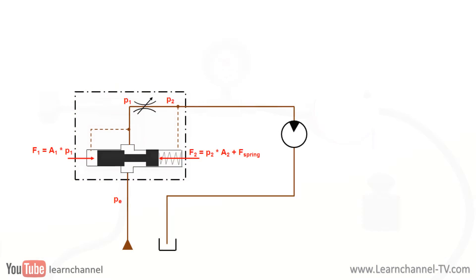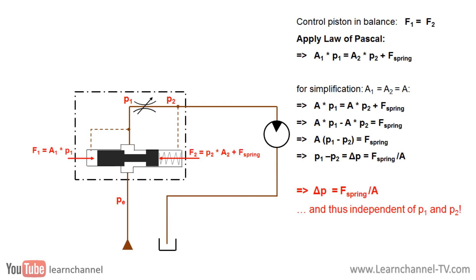For detailed information, let's switch to a schematic view. Consider the control piston in balance. As deduced aside, the pressure drop at the throttle point is independent of pressure P1 or P2, but of constant value. However, this also means that the flow rate must be constant.